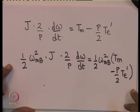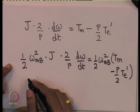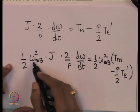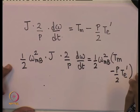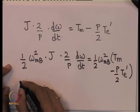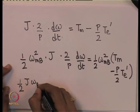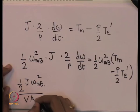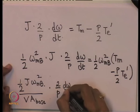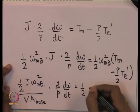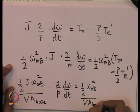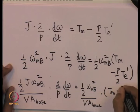Multiplying by (1/2)·omega_m_base² and then dividing both sides by the volt-ampere base of the machine, we get: (1/2)·J·omega_m_base² / VA_base × (2/p) · d(omega)/dt = (1/2)·omega_m_base / VA_base × (T_m − (p/2)·T_e'). Here, omega_m_base is the rated mechanical angular frequency of the machine.